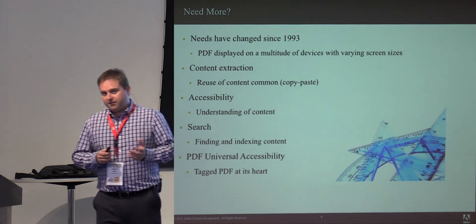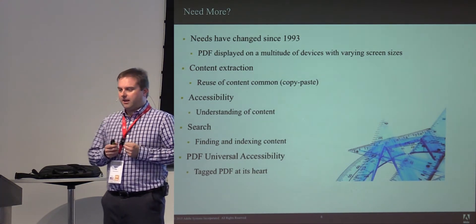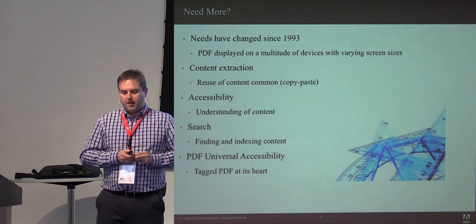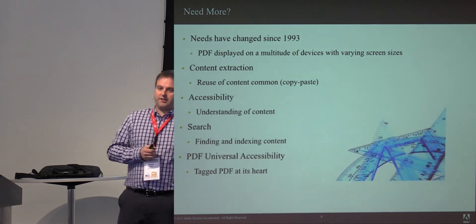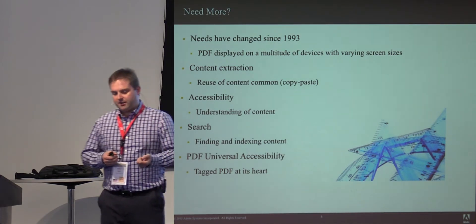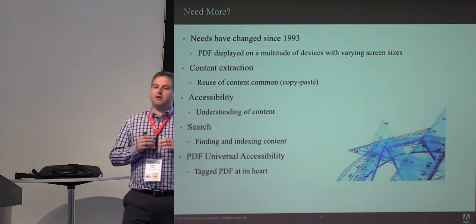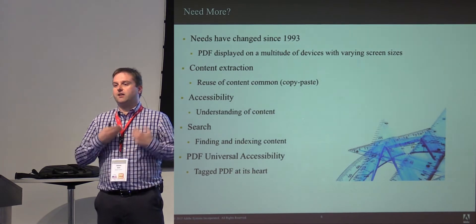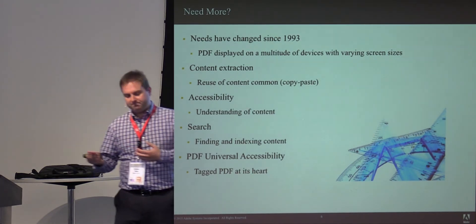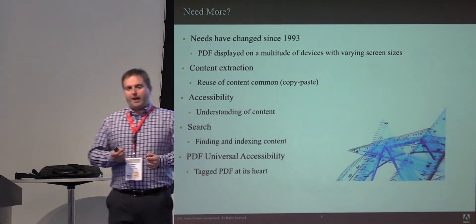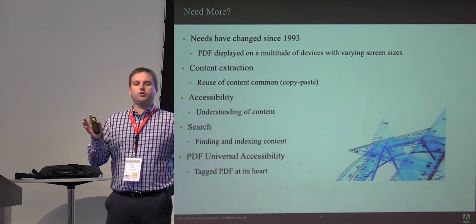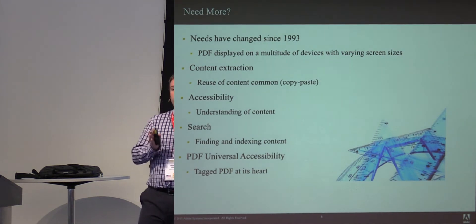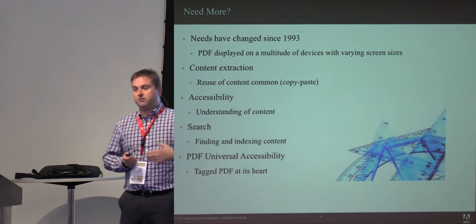Since 1993, the needs for PDF have changed significantly, which is why things like PDF-UA and Tagged PDF came into play and how PDF can be an accessible format. Content extraction, search, and data analysis require access to content that wasn't fundamentally available in early PDF. Accessibility requires an understanding of content to accurately convey meaning — whether this is a paragraph or a heading. PDF-UA is almost entirely composed around the concept of Tagged PDF, which is most of what PDF-UA talks about.